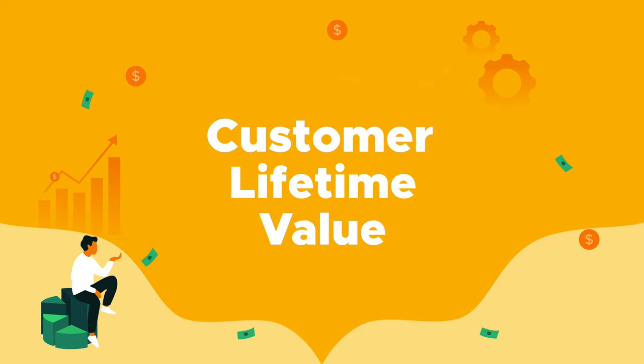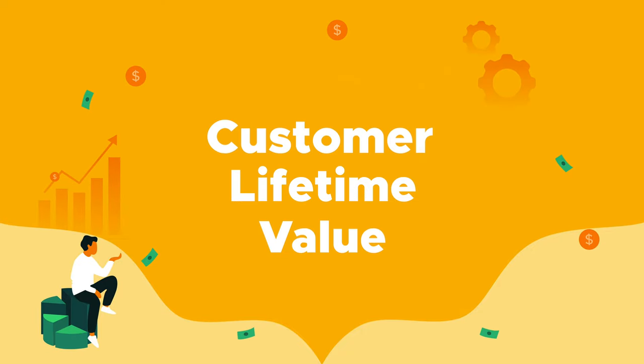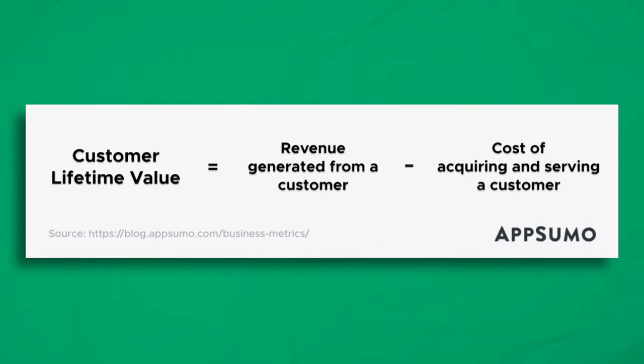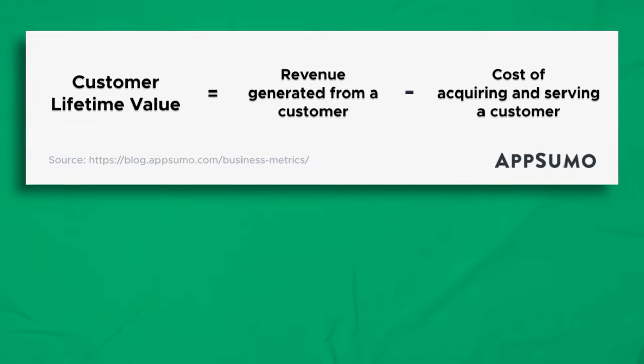Number 7: Customer Lifetime Value, or CLV. This metric helps predict the total revenue your business generates from a single customer over the lifetime of that customer. You can calculate CLV by subtracting the cost of serving and acquiring a customer from the revenue generated from that customer. Use this metric to see if all of those marketing campaigns and servicing costs actually generate profits. It costs less to keep a customer than to acquire a new one, so a high CLV is a great sign.